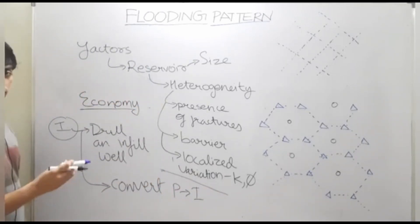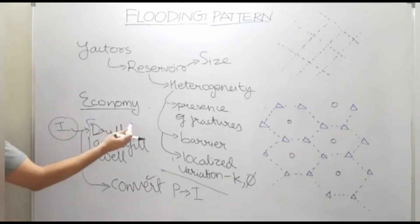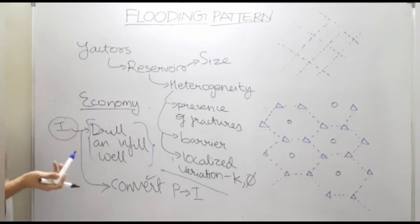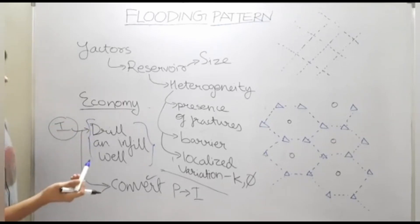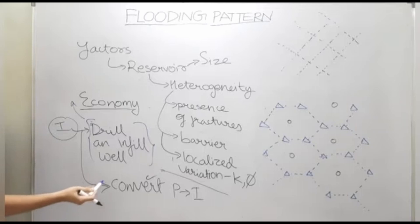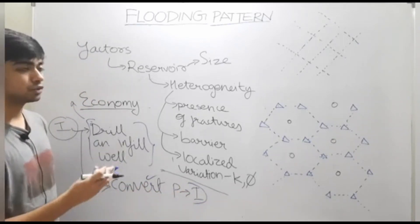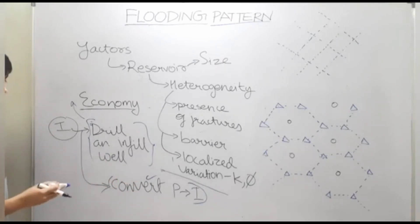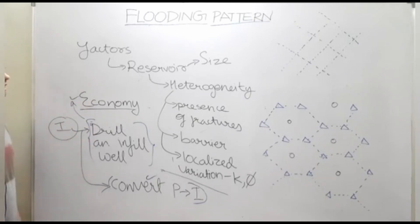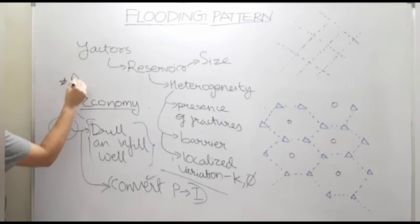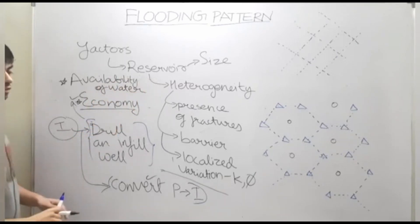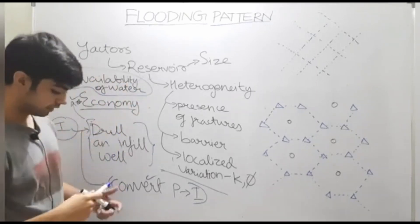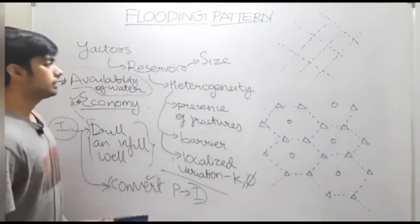Converting a producing well to an injector well is the most cost-effective method, because drilling a new well is time-consuming and requires very high investment. By designing a good pattern, you can still achieve better recovery through conversion. Economy is one key factor, and another factor is the availability of resources such as water, since different flooding patterns require different quantities of water. These are the three broad factors that help in selecting a flooding pattern.